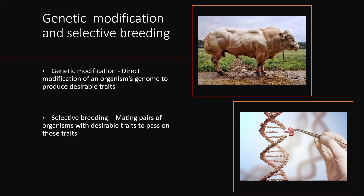That photo of the Belgian Blue cow is actually real, and surprisingly it's not a result of genetic modification at all. It's a result of selective breeding, where over generations you select mating pairs of an organism to get desirable traits. In this cattle, two specific mutations have been carried through generations: a very low fat gene — which is why the muscle definition is so high — and a double muscle fiber gene. That's the result of selective breeding.